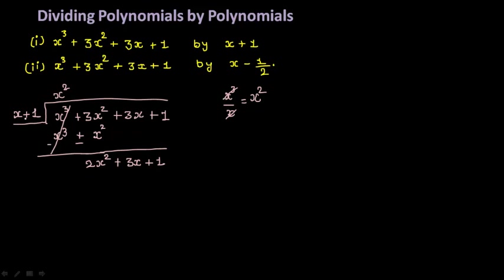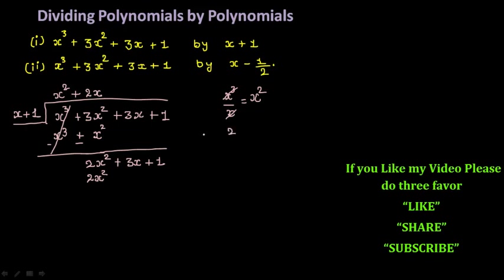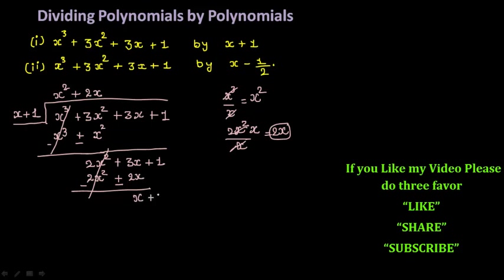Now you need to multiply x with some term to get 2x square. You need 2x square and here you have x, so divide: x cancels and you get 2x. So multiply by 2x. Then 2x into 1 gives you 2x. Again change the sign: 2x square minus 2x square cancels, and 3x minus 2x gives you x plus 1.